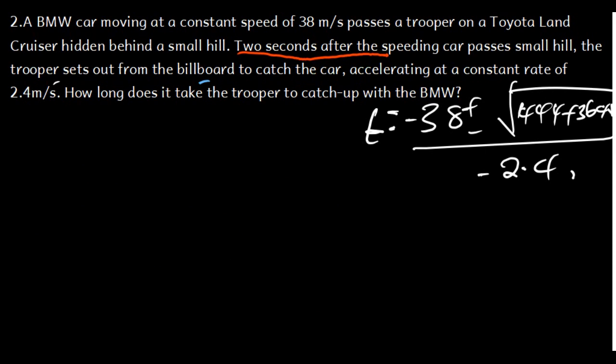Computing: 1444 + 364.8 = 1808.8. Taking the square root: √1808.8 ≈ 42.53. So T = (−38 ± 42.53) / (−2.4).